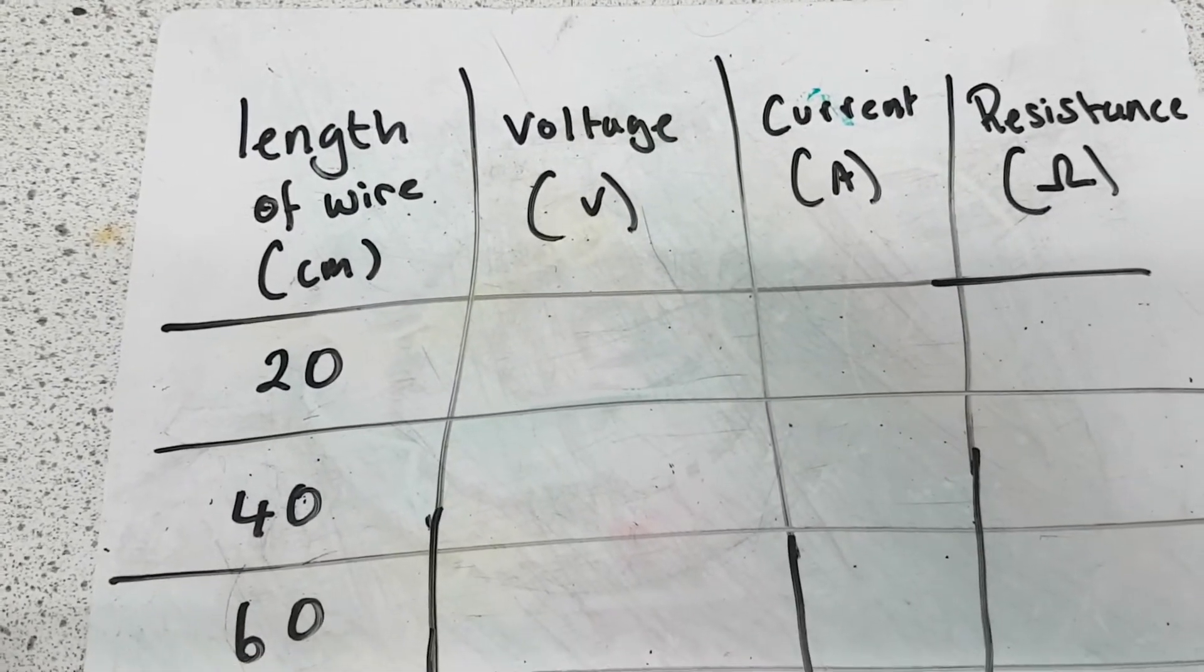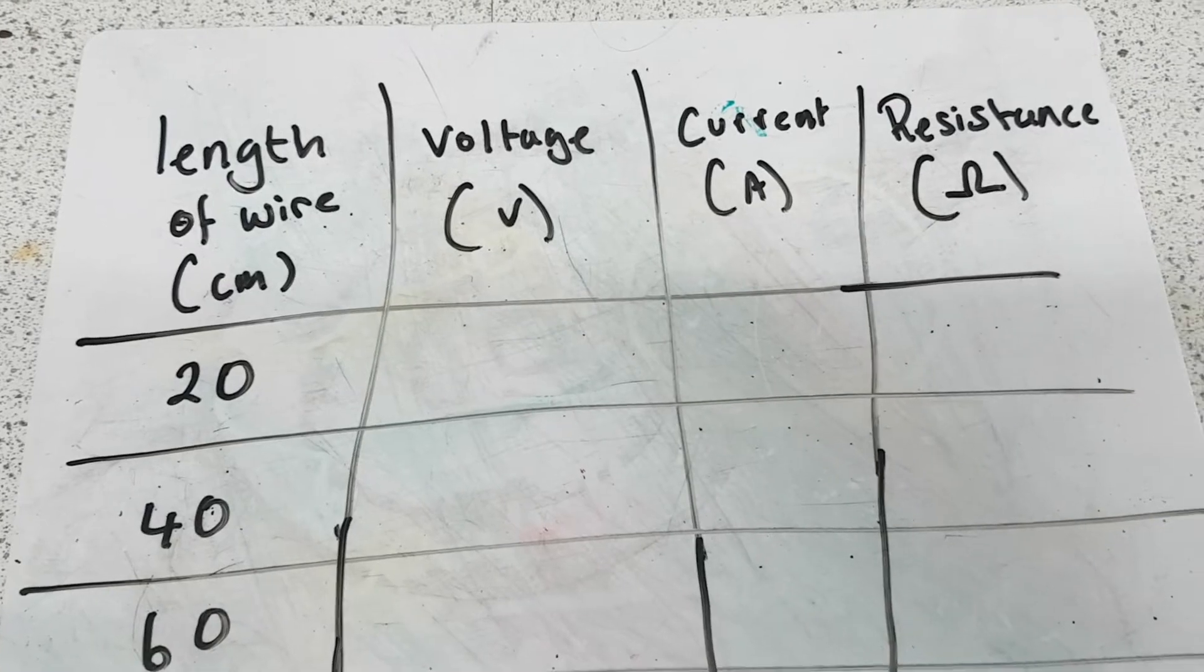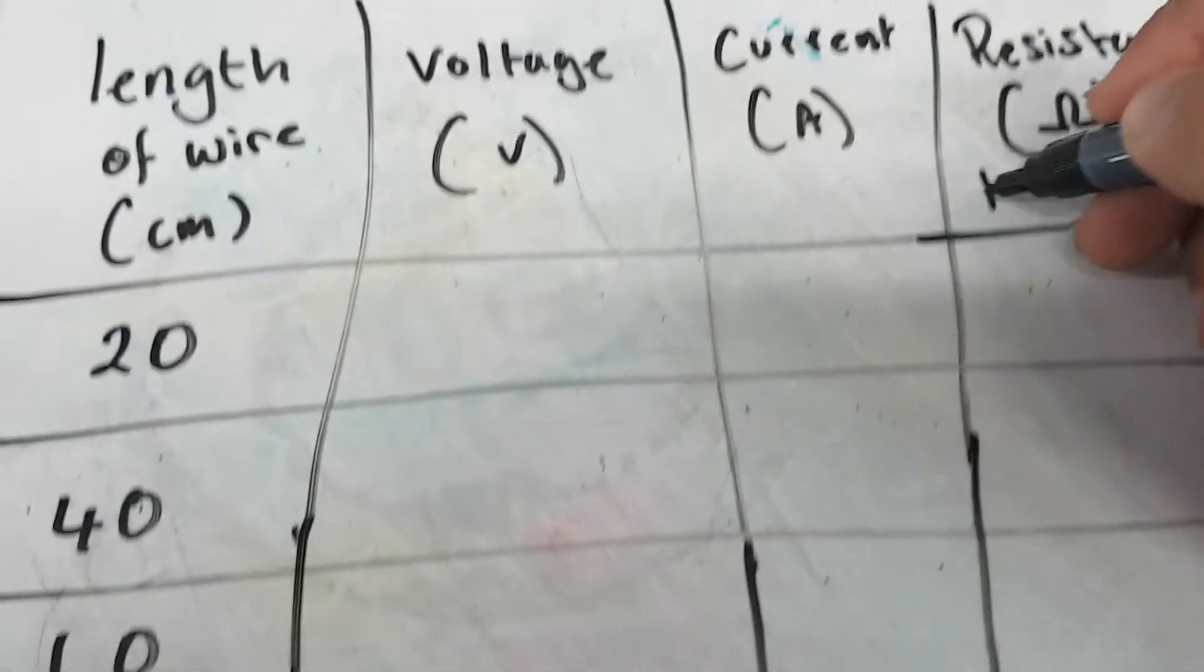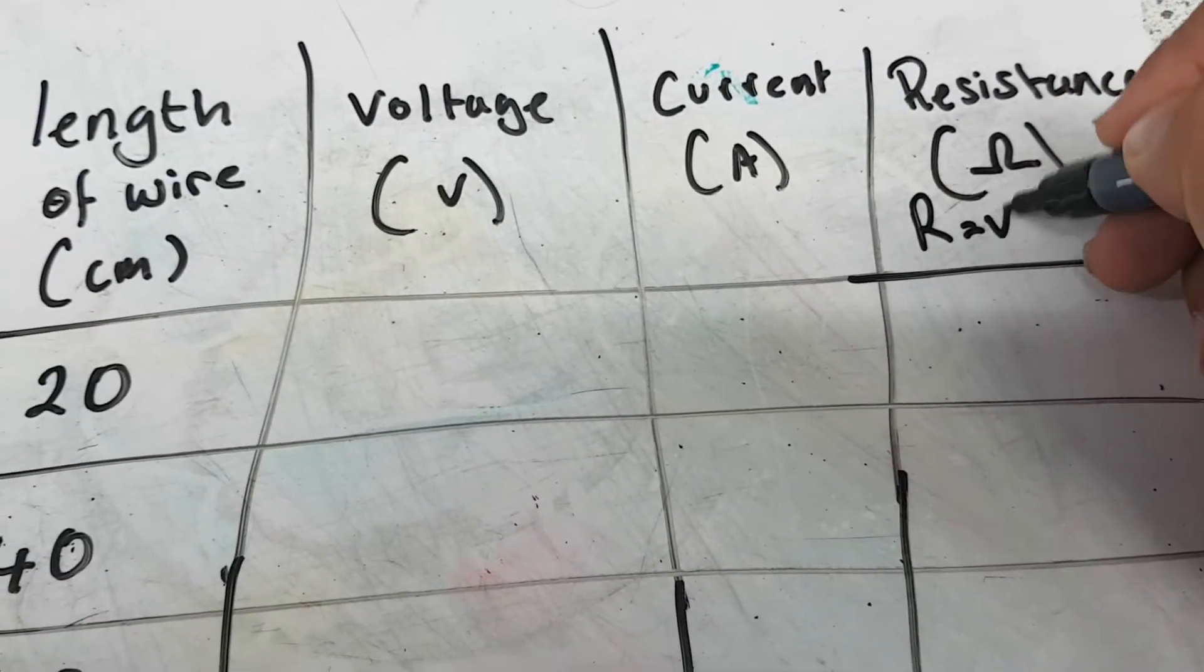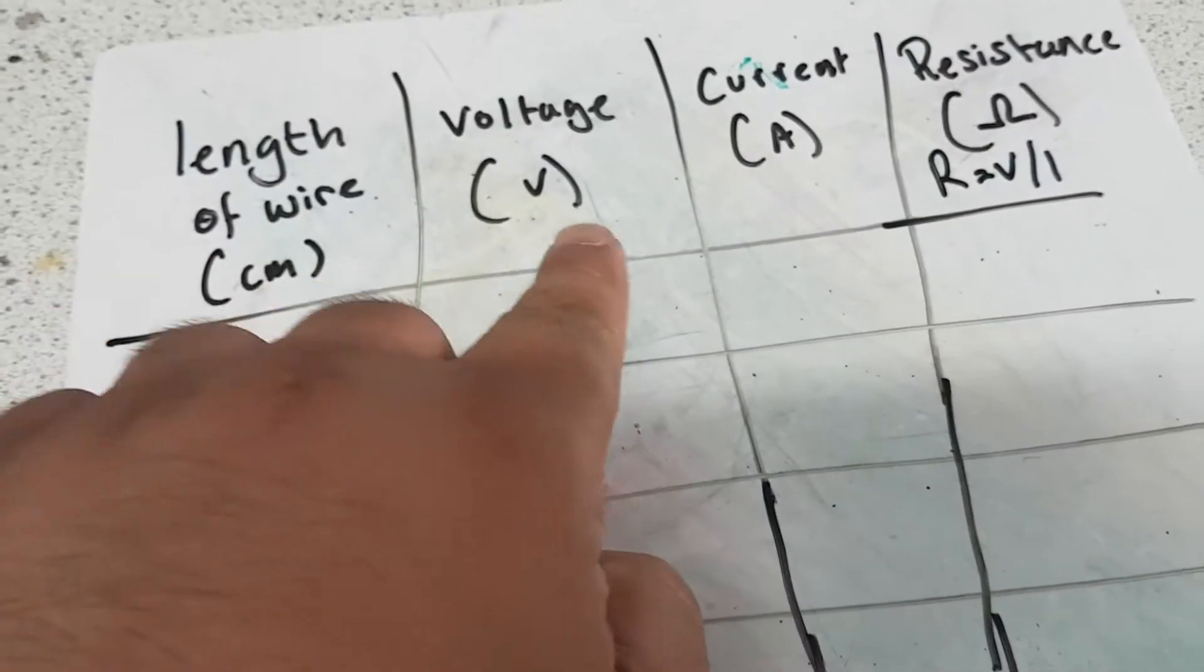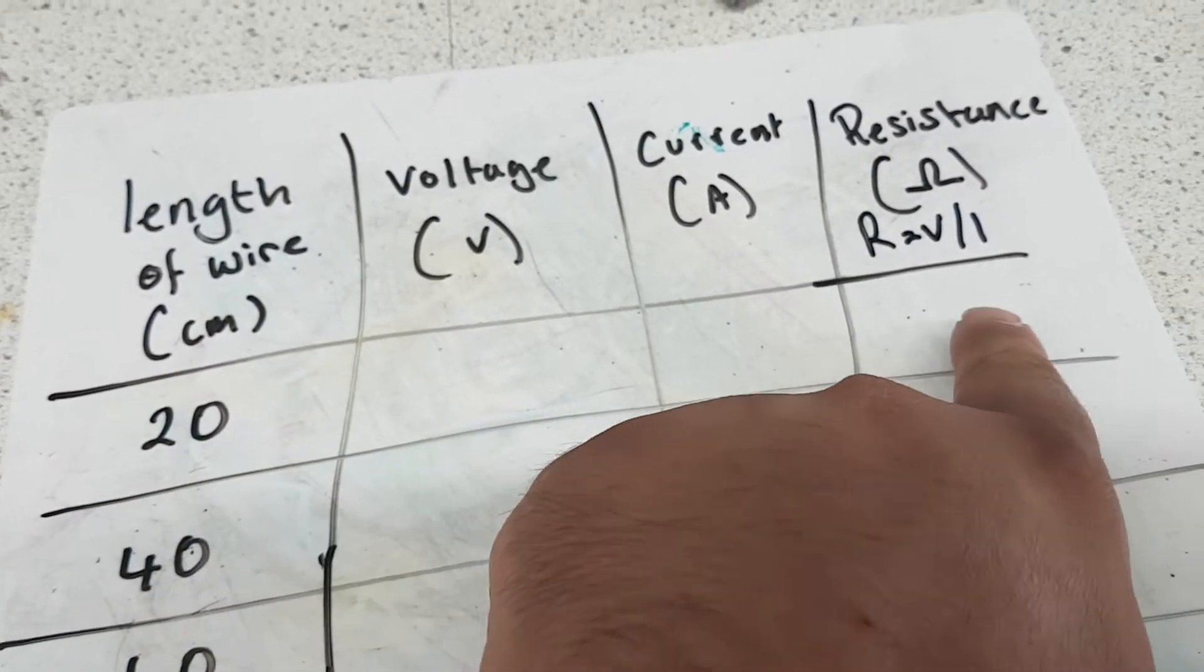Then we're going to measure the voltage in volts, the current in amps, and the resistance. Now, the resistance is going to be worked out by using the formula: resistance is equal to voltage divided by current. So you'll do this column divided by that column to give you your resistance.